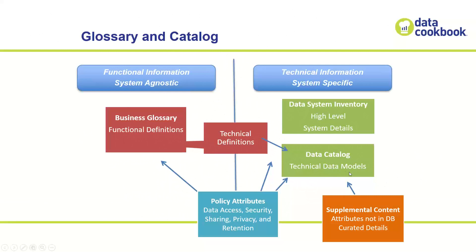There's another thing people sometimes get confused about: if you have your technical data model and you're looking at columns, you can add supplemental curated information around that data model — a more detailed comment, clarifying the data type, or tagging it as sensitive, FERPA, HIPAA, PII, GDPR, or similar. That is supplemental information associated with the physical data model. That's not the same as having a glossary term, which is also supplemental information but specifically connects a physical field up to a business term. You can also have policy attributes associated at the glossary level.